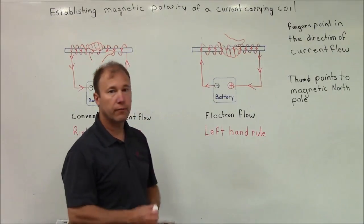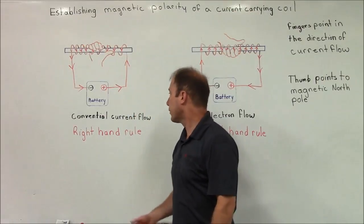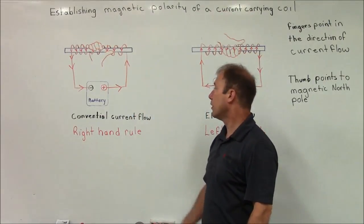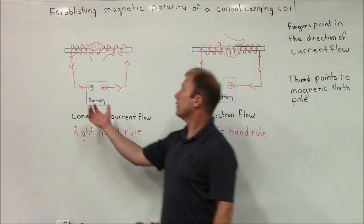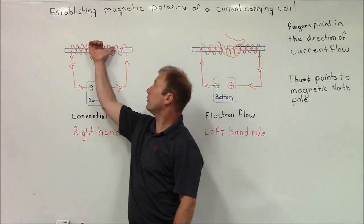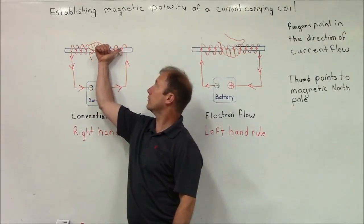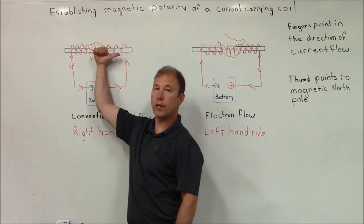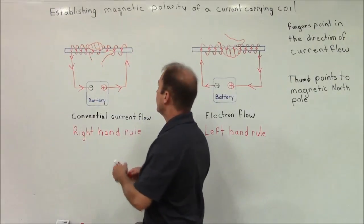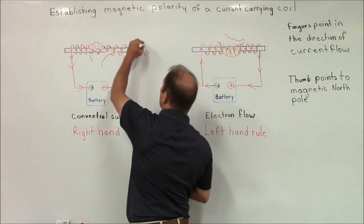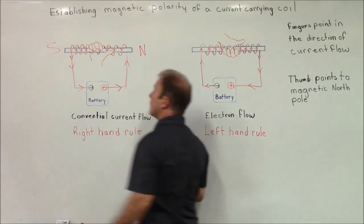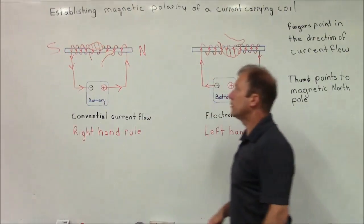Starting with the conventional current flow example: using our right hand, our fingers follow the arrows and our thumb points in the direction of north. So in this case, this end is magnetic north, and of course that would be south.